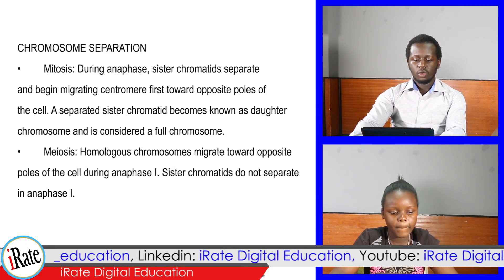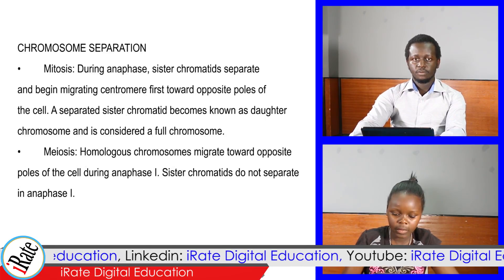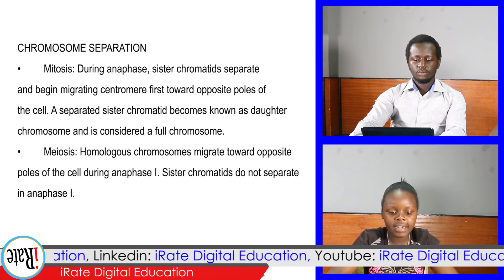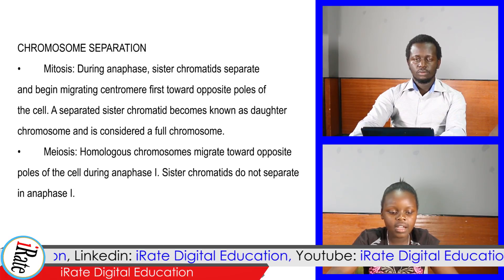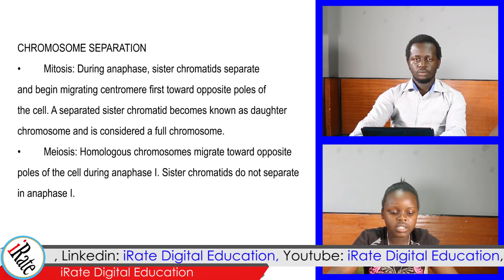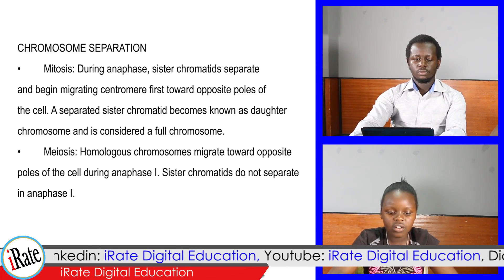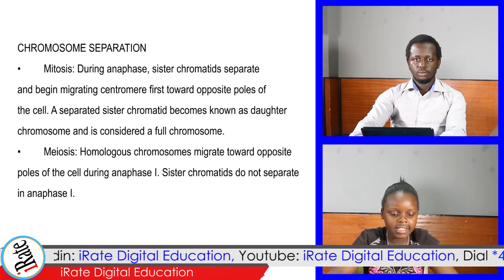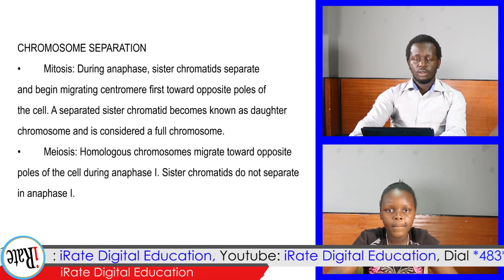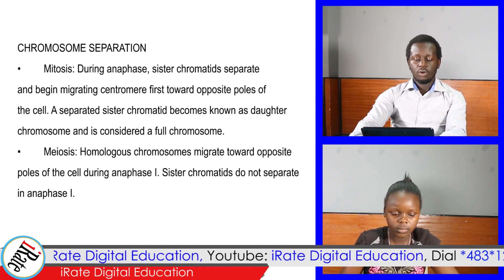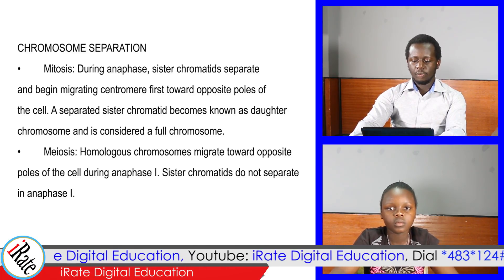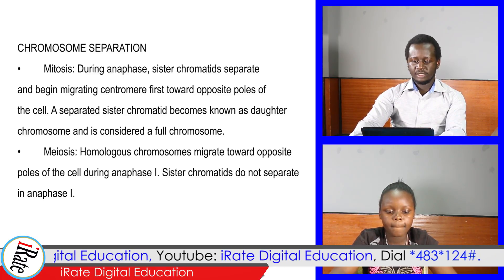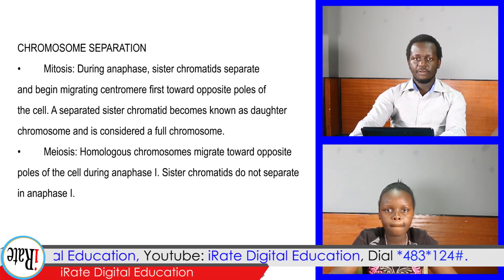Point 7: Chromosome separation. In mitosis, during anaphase, sister chromatids separate and begin migrating centromere-first toward opposite poles of the cell; a separated sister chromatid becomes known as a daughter chromosome and is considered a full chromosome. In meiosis, homologous chromosomes migrate towards opposite poles of the cell during anaphase I; sister chromatids do not separate in anaphase I.